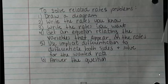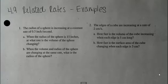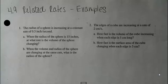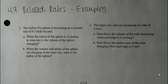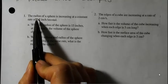Let's do some examples using the 4.9 related rates handout. The first problem: the radius of a sphere is increasing at a constant rate of one half inch per second. Part A: when the radius of the sphere is 15 inches, at what rate is the volume changing? Part B: when the volume and the radius are changing at the same rate, what is the radius?